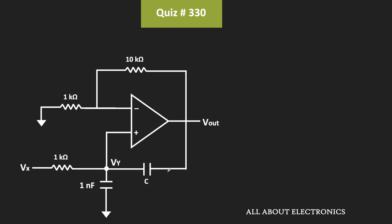Now since the op-amp is the ideal op-amp, that means no current is flowing into the op-amp terminals. Moreover, here due to the negative feedback, this V- will be equal to V+. That means the voltage at the inverting as well as the non-inverting terminal will be equal. That means the voltage at this end will also be equal to Vy.